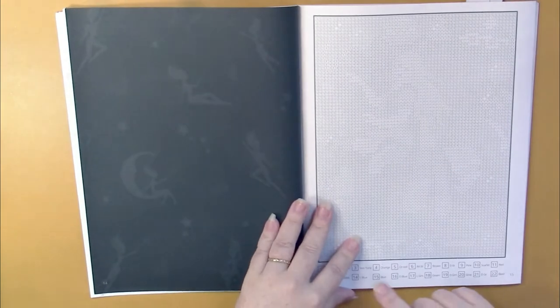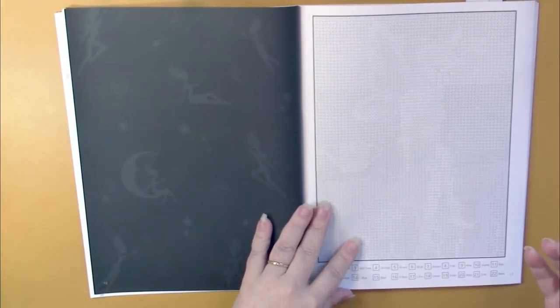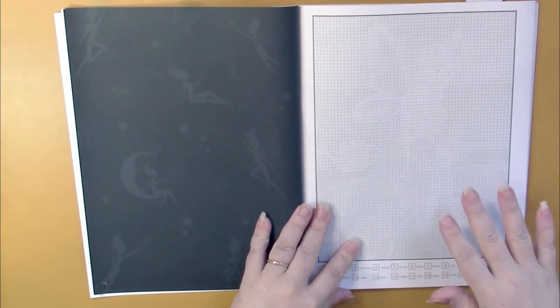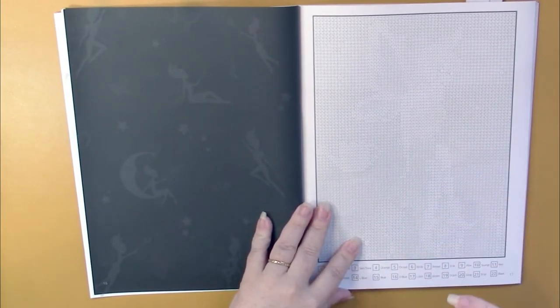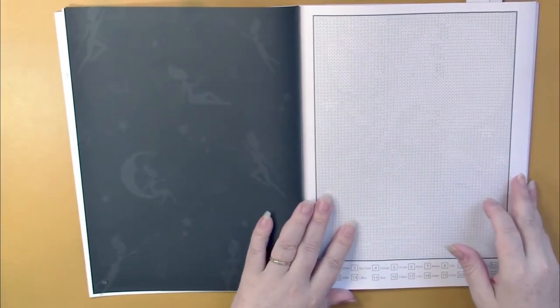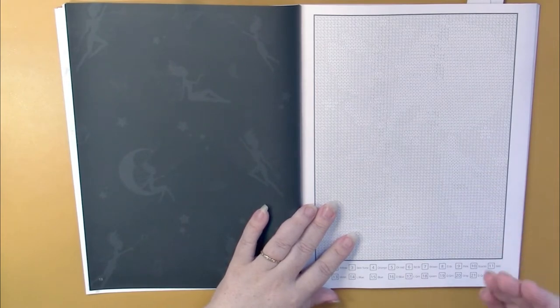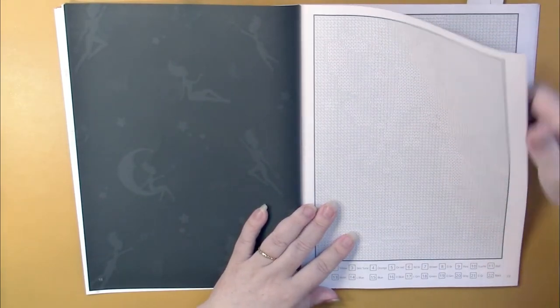Now instead of just going through the book and showing you the blank grids which we mostly can't tell what they are—you can't tell what they are when you're looking at them, but when they come up on the camera it sometimes can show you what it is—I'm just going to show you a couple of pictures that I've done in the book so you can see what they look like.